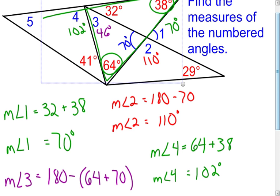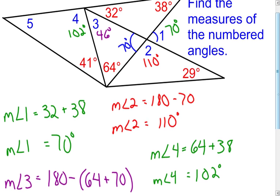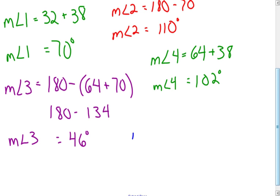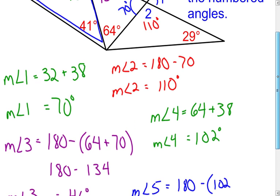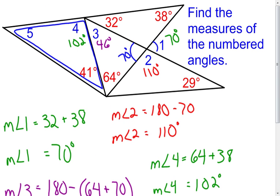All I have left now is the measure of angle 5. I'm going to look at one triangle where all three angle measures have to add up to 180 degrees. Taking the grand total and subtracting out the two known angle measures — 102 degrees and 41 degrees — gives 143 degrees. Subtract that from 180, and I end up with 37 degrees for the measure of angle 5. I have just calculated all five angles in this picture created by a bunch of triangles.